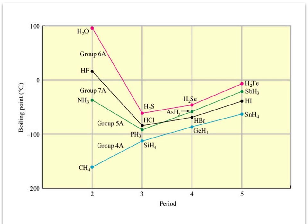We'll start by taking a look at this chart, which shows boiling point versus period — the location on the periodic table of the central atom in these molecules, like carbon, nitrogen, or iodide. The chart has two different regions: one associated with period two, and another where the data trends somewhat linearly as we go from, say, PH3 and AsH3 and SbH3, or from methane all the way up to stanane SnH4.